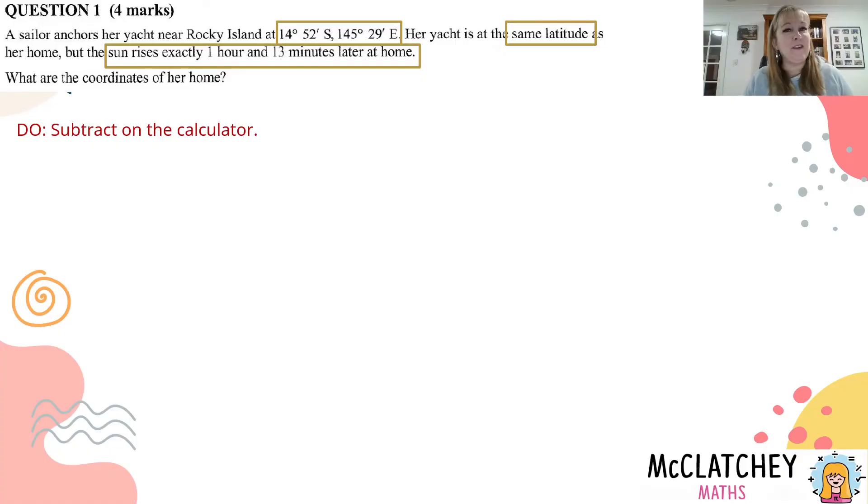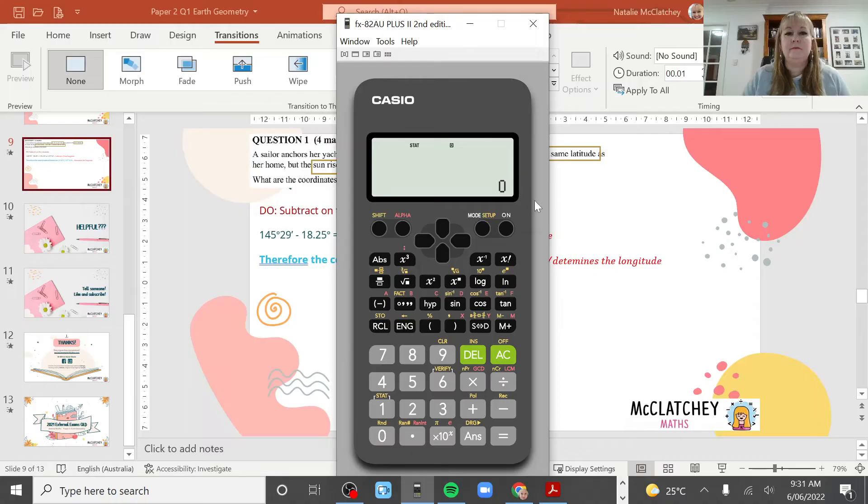So I'm going to get my calculator ready and show you how to do this problem. Okay so I've got my Casio calculator here. If you're using a different calculator it might be a little bit different in terms of where the buttons are.